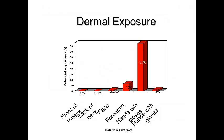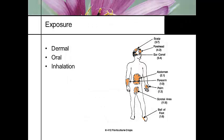Where are you most susceptible to exposure? Most exposure happens on the hands without gloves, so gloves are probably one of the most important things for pesticide safety. Exposure routes include dermal — absorption through the skin — oral, getting it in your mouth, and inhalation. The parts of the body most susceptible are where you have thin skin. Your ear canal is pretty high, and notably the scrotal area is one of the highest exposure areas.